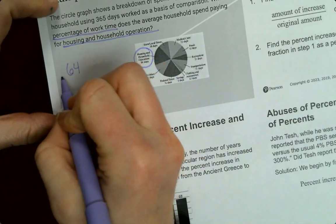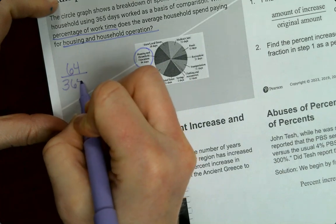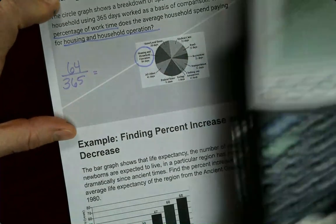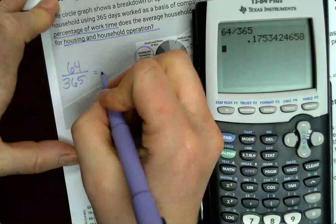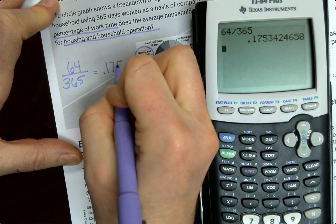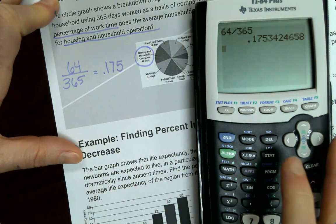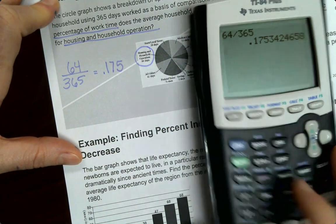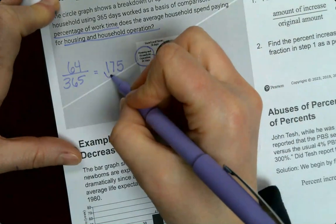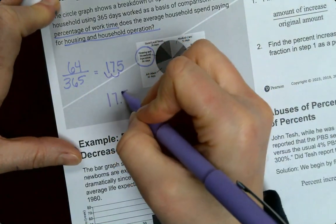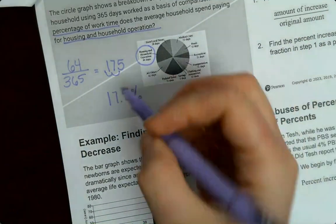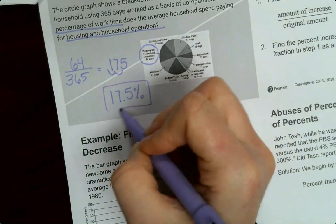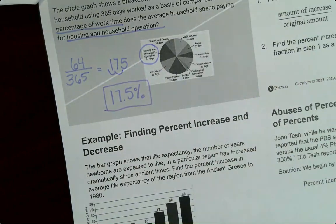So we'll do 64 out of the 365, that equals 0.175. I'm going to do three numbers past the decimal, and then I'm going to move my decimal because they want percent. So one, two, 17 and a half percent is going to go toward housing and household operations.